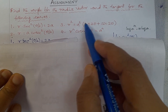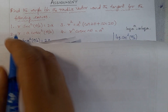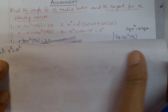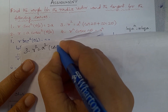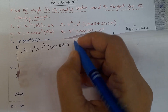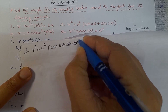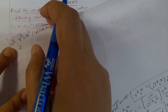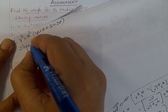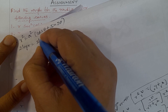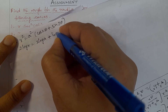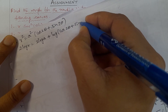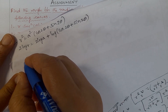Third problem: R² = a²(cos2θ + sin2θ). Write the question first. Then taking log on both sides: 2·log R = 2·log a + log(cos2θ + sin2θ). Then differentiate with respect to θ.